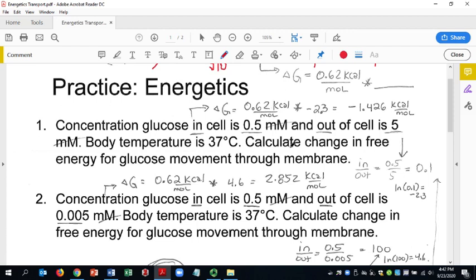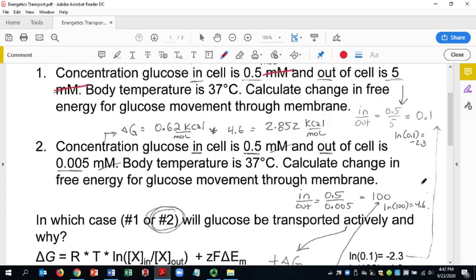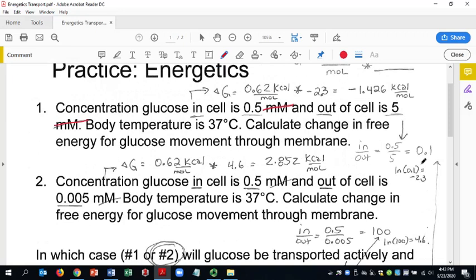This says that the glucose concentration inside the cell is 0.5, outside is 5, the millimolars knock themselves out, so I end up with 0.1. I take a natural log and as it's showing down here I just punch that into Excel on my calculator and I get a number of negative 2.3.